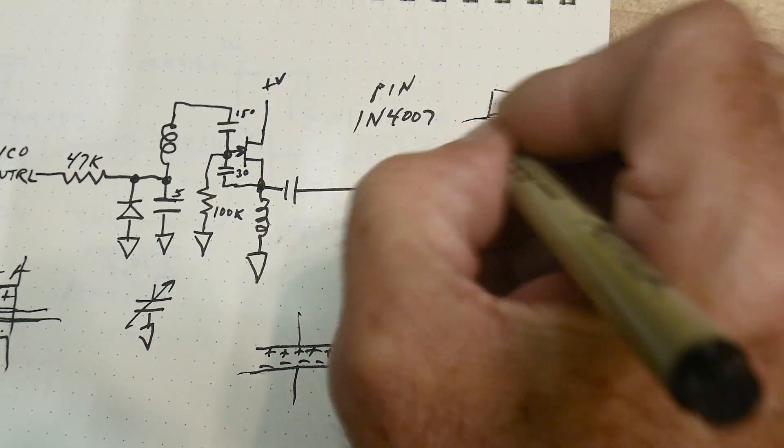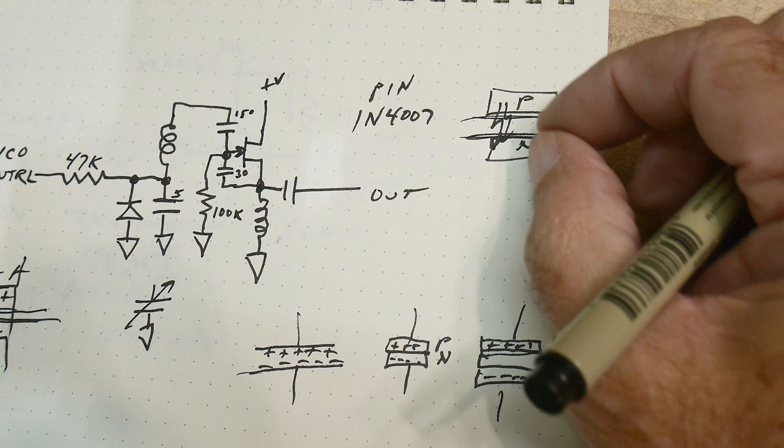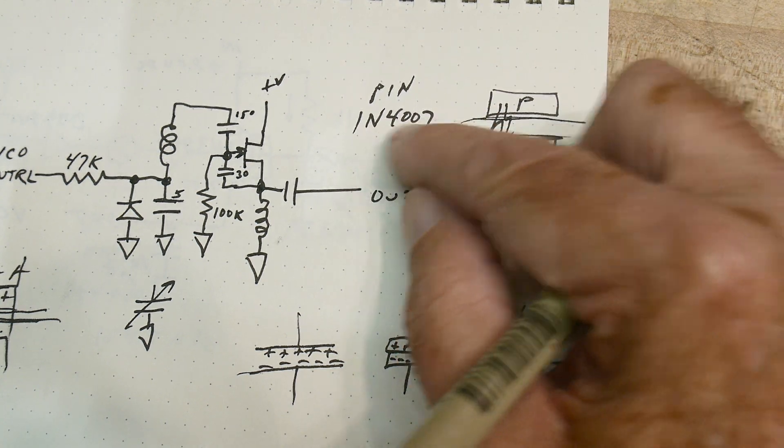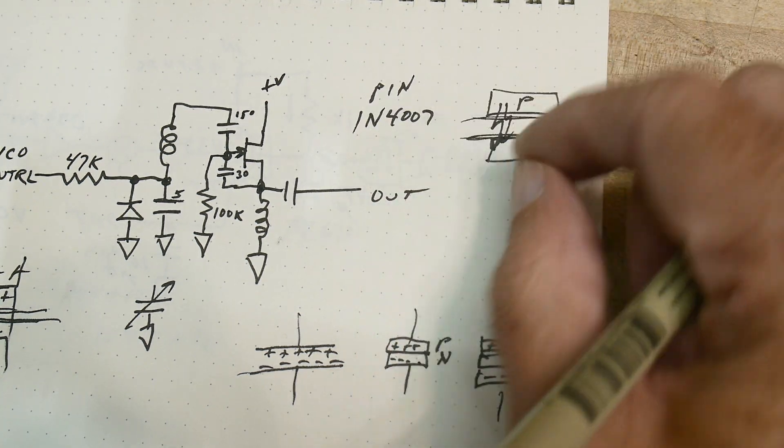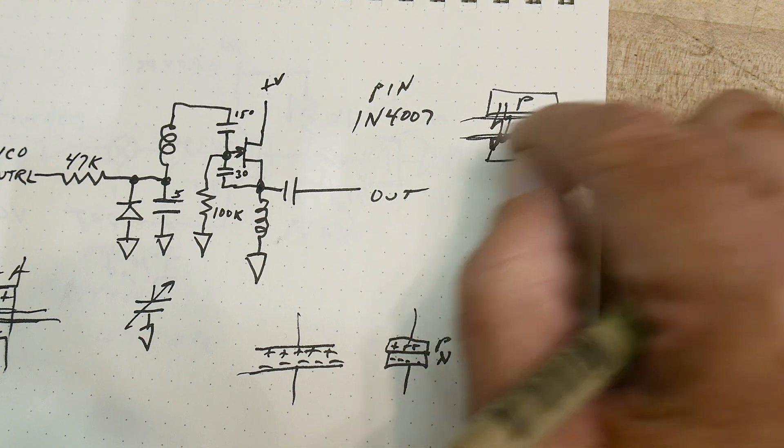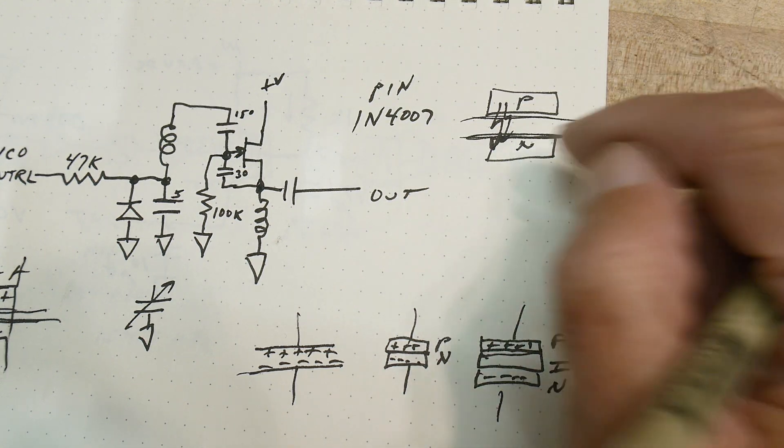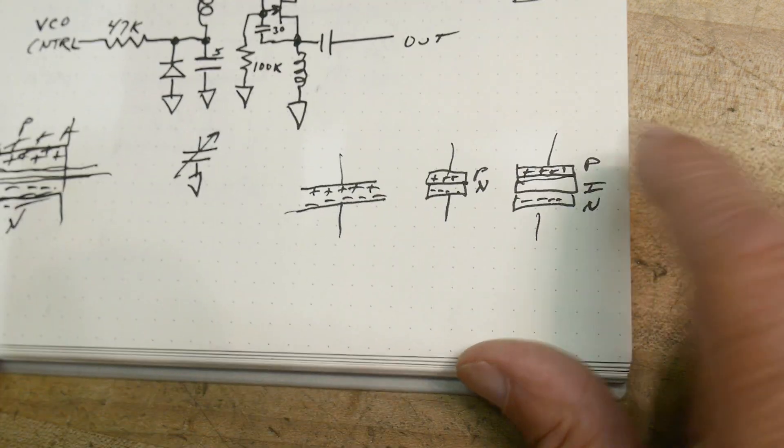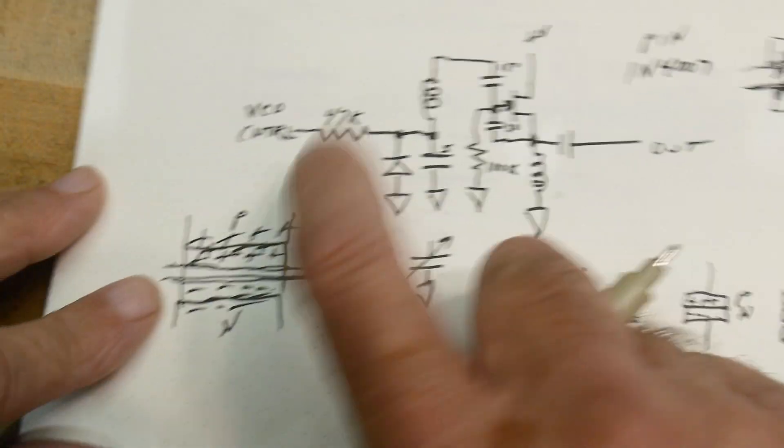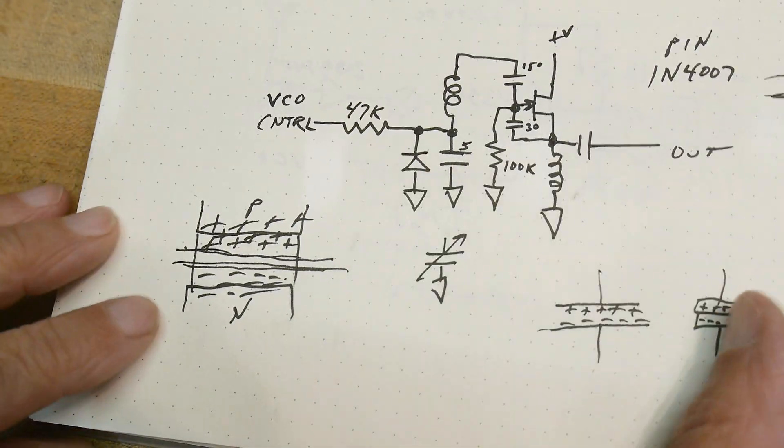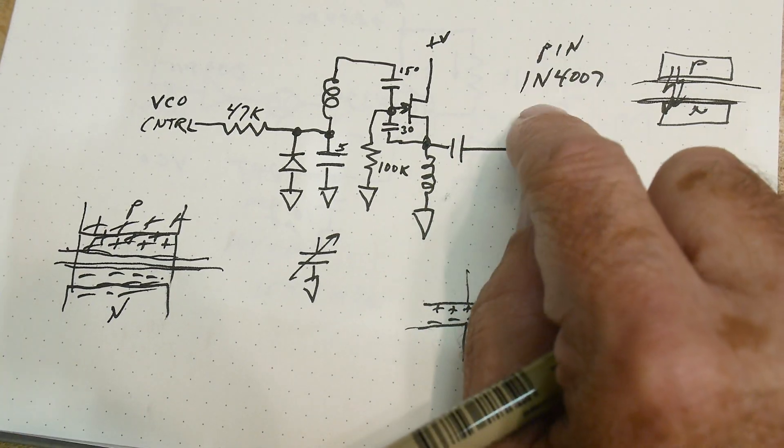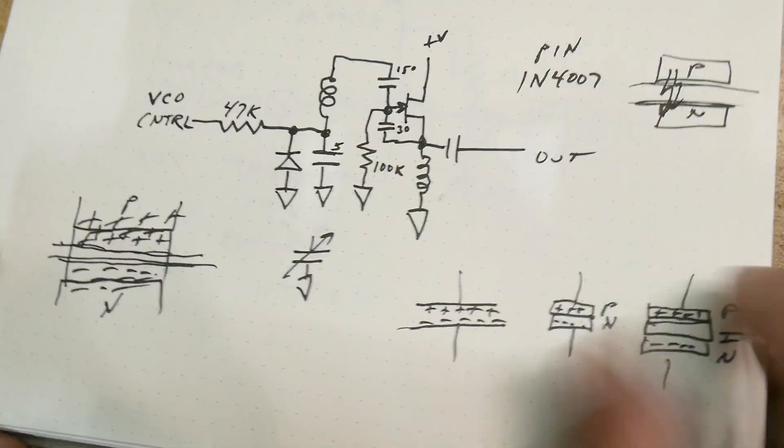Well, that looks an awful lot like a PIN diode. That looks an awful lot like a varactor diode. And in fact, you can use 1N4007s as varactor diodes.